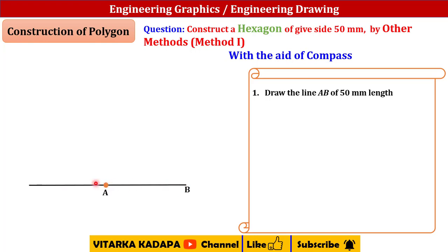Like I can say from here to here it is AB, and from here to here also it will be 50 mm. Just an extension line I am trying to take.